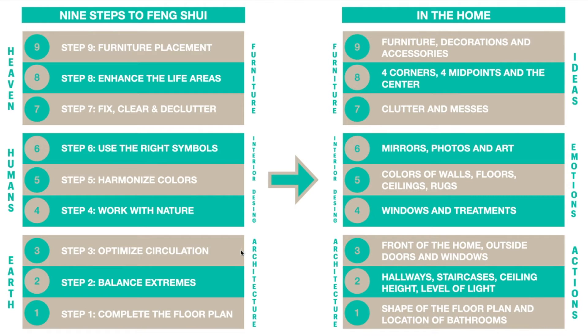Step 3: optimize circulation. This addresses the front of the home, the doors that connect to the outside, and the windows. Step 4: work with nature. This has to do with windows and window treatments.